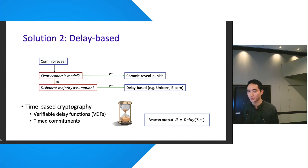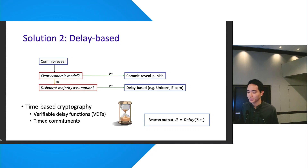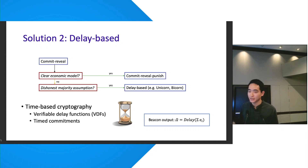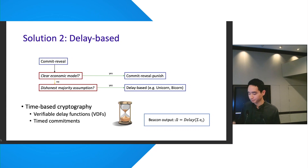In a non-economic model, we ask: do we need to rely on an honest majority to recover from the last revealer attack, or can we tolerate a dishonest majority? The only line of work enabling this is based on time-based cryptography — verifiable delay functions (VDFs) or timed commitments in protocols like Unicorn and Bicorn. The intuition is that we enforce a delay function on the last step of beacon output computation such that the last revealer wouldn't have enough time to pre-compute the output, patching the attack.